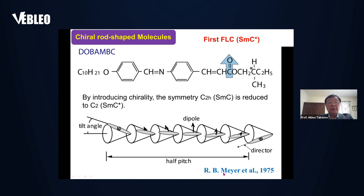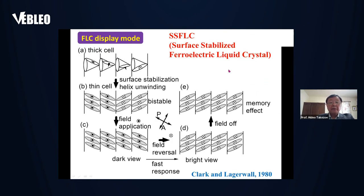They actually showed polar switching in these molecules. Five years later, Clark and Lagerwall showed surface stabilization — namely, if the material is introduced into thin cells, the helical structure is suppressed to show only two states with opposite polarization. By applying an electric field, polarization is aligned and reversed by reversing the field. Because of the fast response and memory effect, ferroelectric liquid crystal displays were very promising, and actually were commercialized.